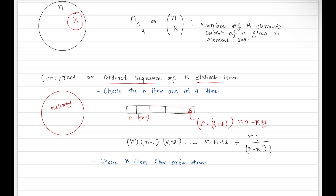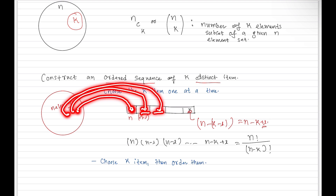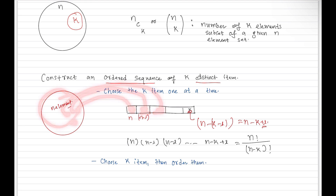So in order to construct an ordered sequence of k distinct elements, what we have done is choose the k items one at a time — for each position we chose elements from the remaining set. This is the number of objects we can get. Now we can solve the same problem using a different approach. We can first choose the k items and afterwards order them. So we can do this same problem in two stages.